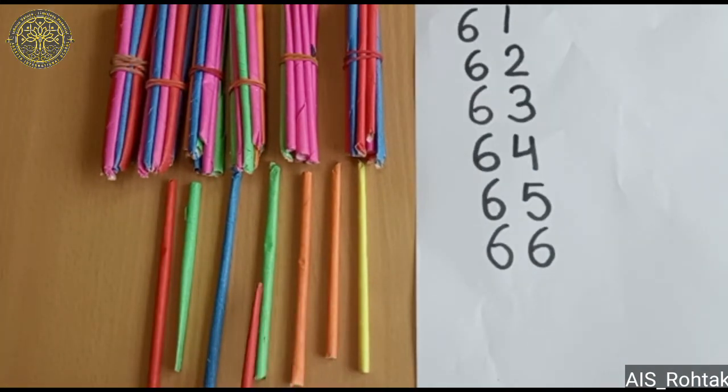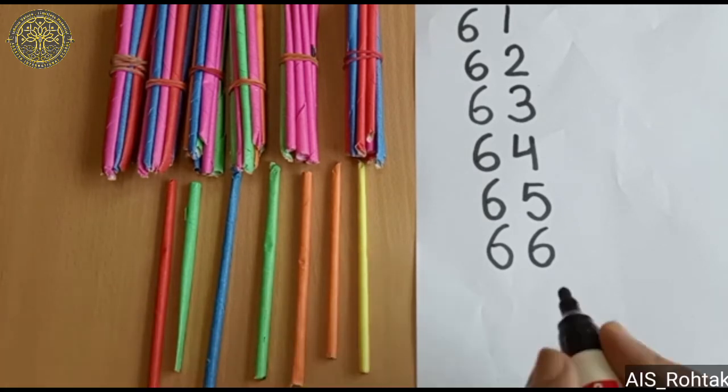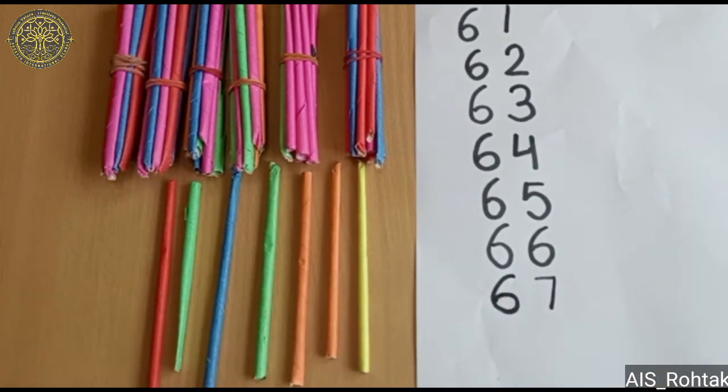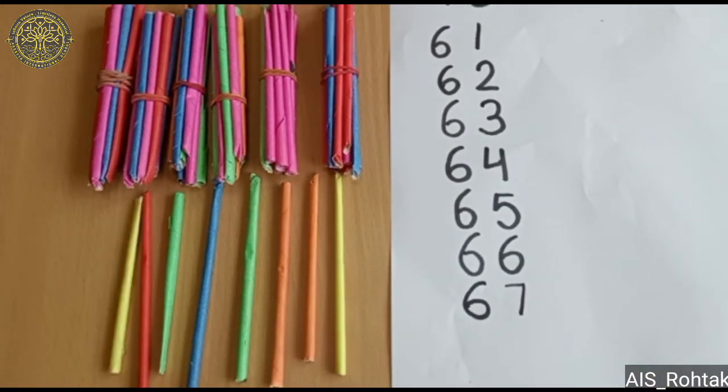1, 2, 3, 4, 5, 6, 7, 7 ones. I can write 7 ones and 6 tens. 67. 1, 2, 3, 4, 5, 6, 7, 8, 8 ones and 6 tens. 68.